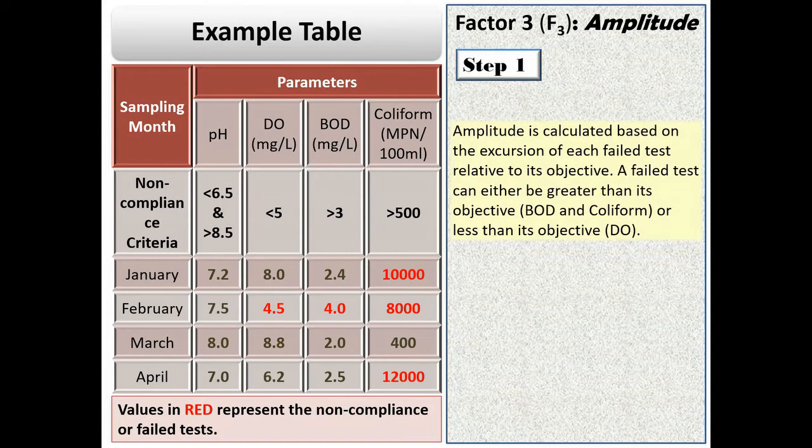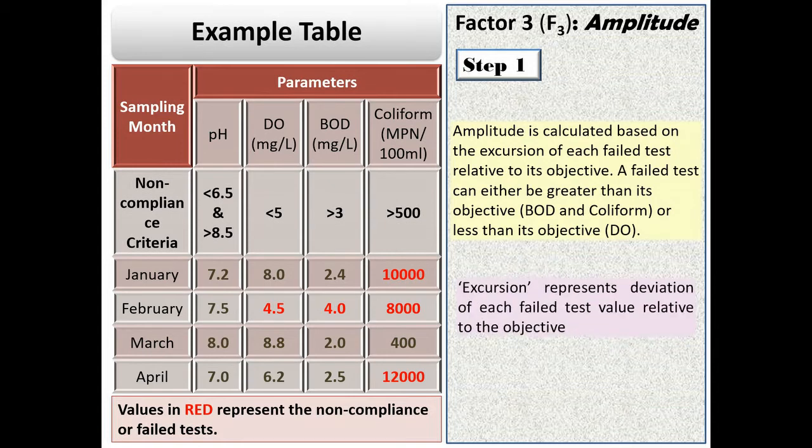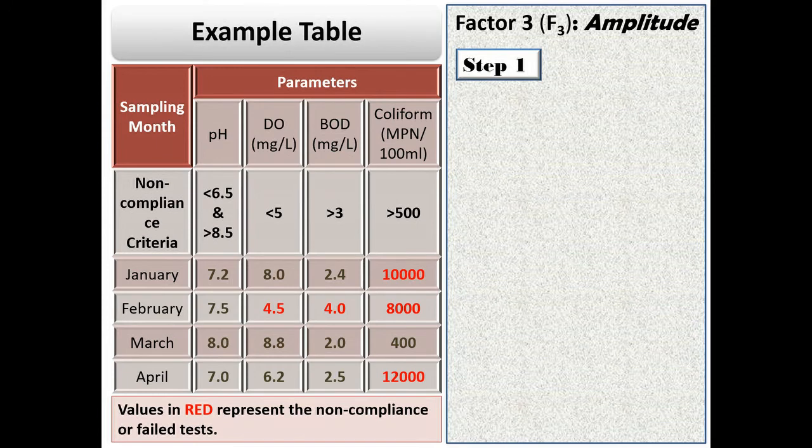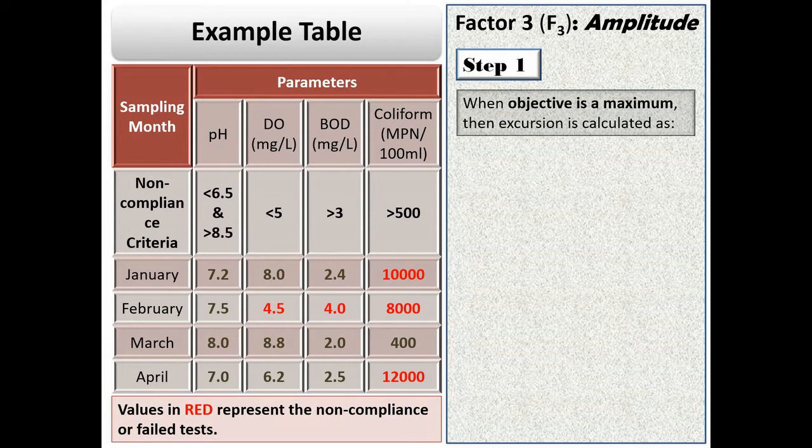Step 1 of amplitude calculation is the calculation of excursion or deviation of each failed test values relative to the objective. The prescribed standard limit or objective can be a maximum, in which case the failed test value will exceed the objective, or it can be a minimum, in which case the failed test value will be less than the objective.